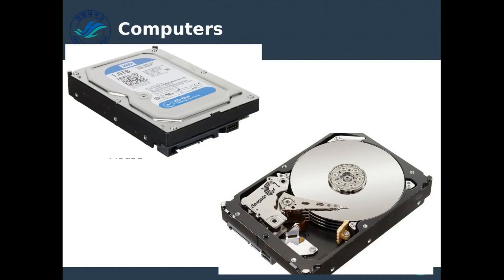On desktop computers, your hard drive is most likely a hard disk drive. They're relatively cheap to store a large amount of data, but they are very slow. RAM is very fast storage but expensive; hard drives are very slow but cheap. So we use a combination — we use hard drives to save the data, and whenever we need it, we pull the data from the hard drive and load it into memory.